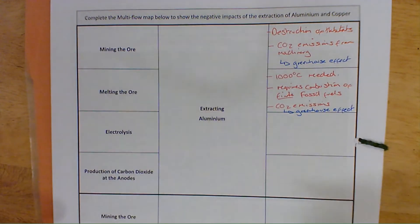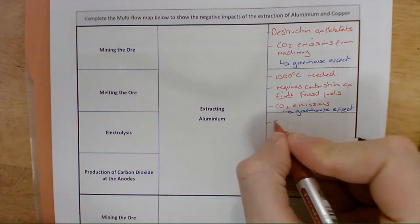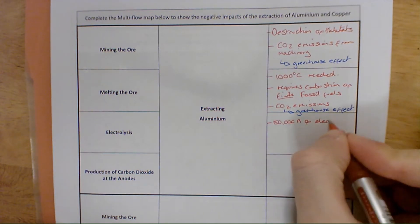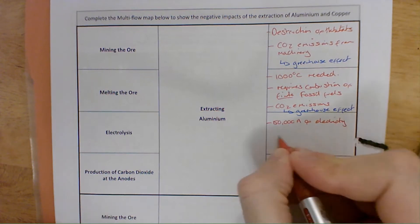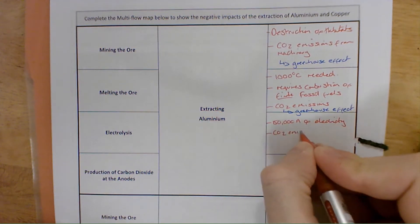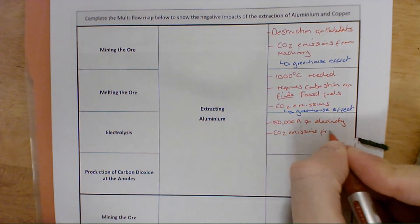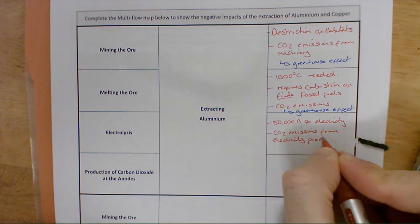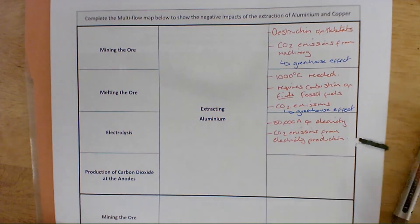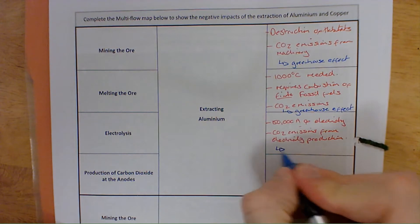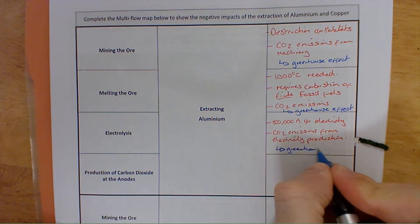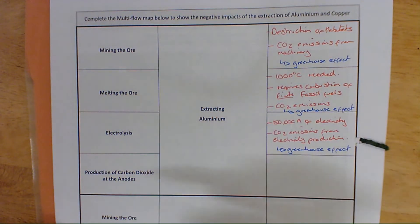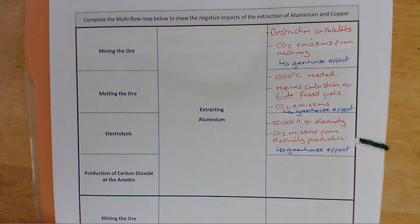The electrolysis itself requires approximately 150,000 amps of electricity, and there are CO2 emissions associated with the production of that electricity, which we need to consider as increasing the greenhouse effect. And then finally, the production of carbon dioxide at the anodes — well, that one's nice and simple, isn't it?